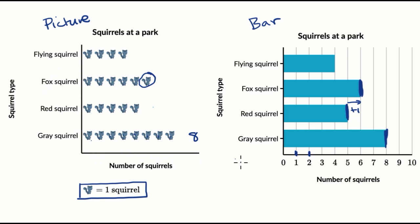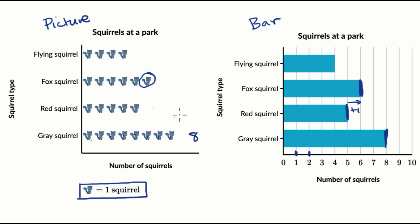Now, it's also important to realize what this is not going to tell you. This isn't necessarily going to tell you the color of the squirrels. You might say, look, this picture graph — it looks like this squirrel is this gray-blue color. No, you can't just assume how it's drawn is actually what it is — it's just a symbol. I'm guessing that a red squirrel is more reddish and a gray squirrel is more grayish, but this doesn't tell you what they look like. This doesn't tell you how hard it was to collect the data. You don't know how long it took, you don't know anything else about the squirrel's behavior, what they might eat, et cetera. You just know how many of each type of squirrel was found at the park.